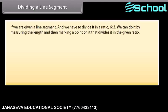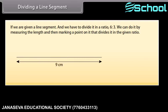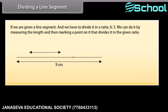If we are given a line segment and we have to divide it in a ratio 6 is to 3, we can do it by measuring the length and then marking a point on it that divides it in the given ratio. But suppose that we do not have any way of measuring it precisely. So we will use constructions to divide a line segment in a given ratio. Let's learn.